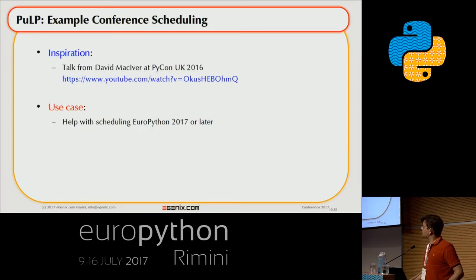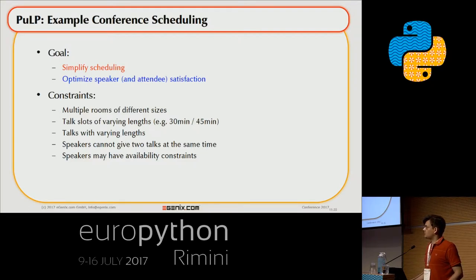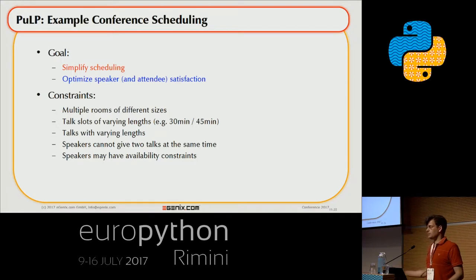The inspiration for this talk and for looking at conference scheduling was a talk from David McEver at PyCon UK last year. I was looking into this because of EuroPython — before EuroPython 2017, we always used manual scheduling, which is a lot of work because we have around 200 sessions to schedule. I was thinking this could simplify things and take criteria into consideration, like speaker preferences or attendee preferences. We look at statistics from talk voting, for example, and try to use that to assign the proper rooms.